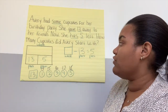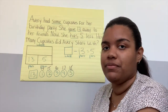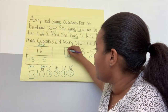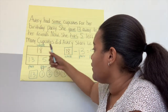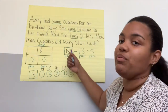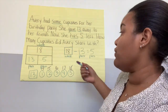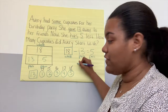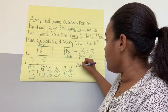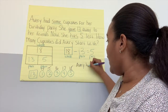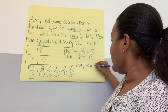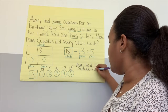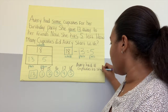So what do we need to do now? Where do we write this 18? Good — we write it in our whole space on our part-part-whole model, and then we write it here in our number sentence. Let's write a word sentence — what's the sentence? Avery had 18 cupcakes to start with.